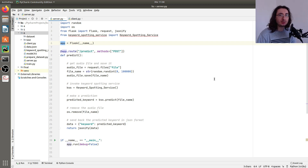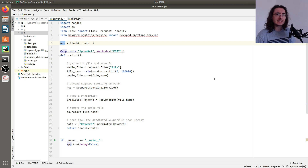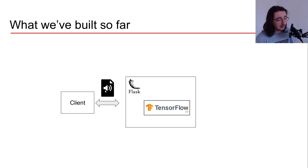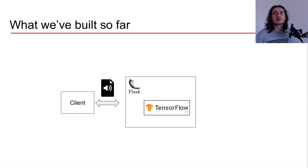Hi everybody and welcome to the deep learning audio application from design to deployment series. Last time we built a Flask application where we deployed our speech recognition system. So far we built a client which can send a POST request with an audio file with our keyword, and we have a Flask development server that picks that up. The Flask application serves the audio file to TensorFlow, TensorFlow analyzes the information, makes a prediction, and sends it back.